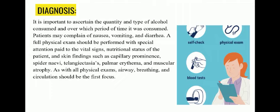Regarding diagnosis: it is important to ascertain the quantity and type of alcohol consumed and over which period of time it was consumed. Patients may complain of nausea, vomiting and diarrhea. A full physical exam should be performed with special attention paid to vital signs, nutritional status, and skin findings such as caput medusae, spider naevi, telangiectasia, palmar erythema and muscular atrophy. Airway, breathing and circulation should be the first focus. A blood test or breath test is performed first, followed by urine and blood samples sent to the laboratory for further diagnosis.